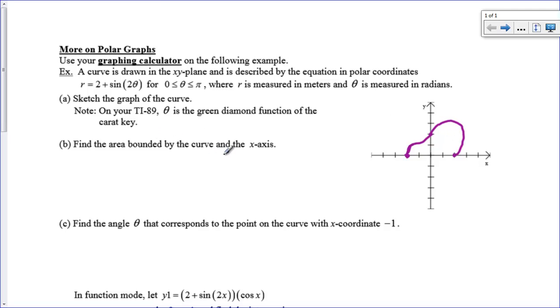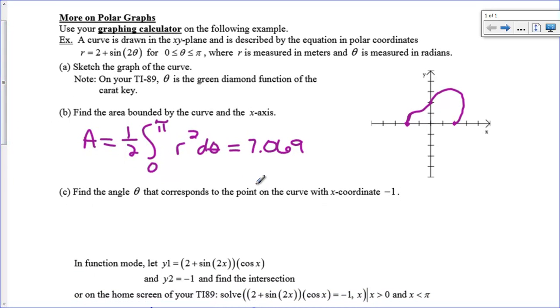Find the area bounded by the curve and the x-axis. This is sort of nice and easy. They've already given me my theta intervals, so I just have to use my formula. Area equals 1/2 the integral from 0 to π of r² dθ. I'm going to use this on my calculator, and it works out to be 7.069. So now we're going to go forward and answer some different questions.